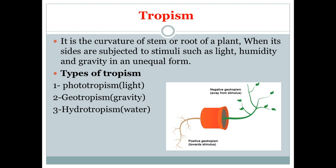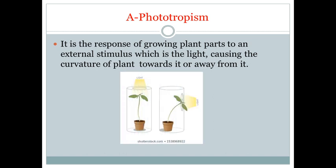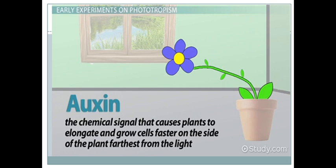Phototropism is the response of a growing plant, or part of the plant, to the stimulus of light, causing it to move towards it or away from it. As you can see in this picture, the light is on one side, so the plant starts moving towards the light. If the light is placed upwards, the plant will grow straight up. This movement is caused by a chemical signal called auxin, which causes the plant to elongate and grow cells faster on the side far away from the light.